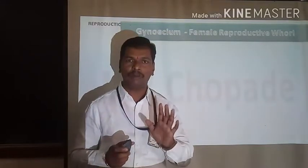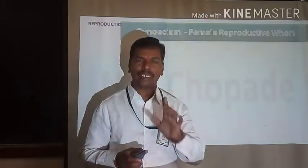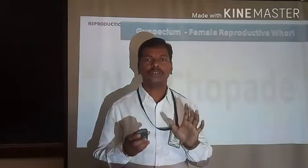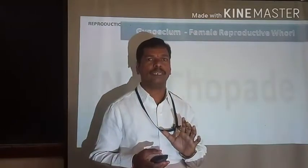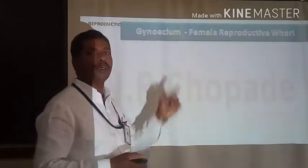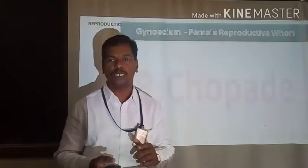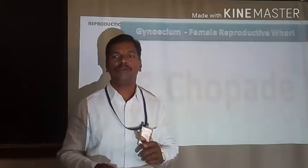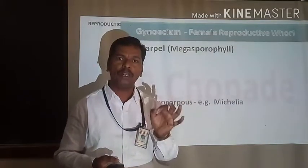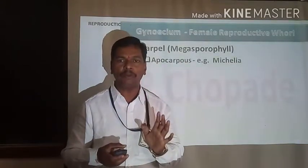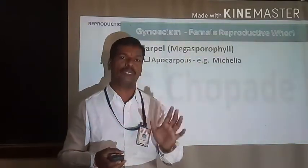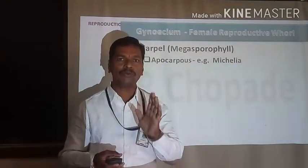Now in this lecture we have to discuss the remaining part concerned with sexual reproduction — that is, the development of the female gamete. First we have to discuss the introductory part concerned with the entire structure of the female gamete. The gynoecium acts as the female reproductive whorl. The individual member of the gynoecium is called the carpel, which is also called the megasporophyll.